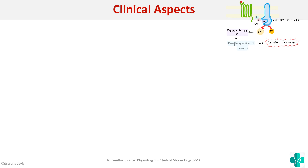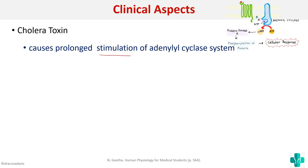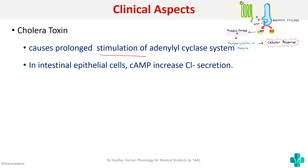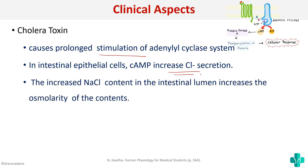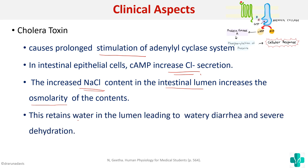An important clinical aspect is the role of cholera toxin. Cholera causes diarrhea because the cholera toxin causes prolonged stimulation of the adenylyl cyclase system. This causes an increase in chloride excretion, leading to increased sodium chloride content in the intestinal lumen, which increases osmolarity. Water is not reabsorbed properly, causing watery diarrhea and severe dehydration. Cholera toxin acts by stimulating the adenylyl cyclase system, increasing cAMP.